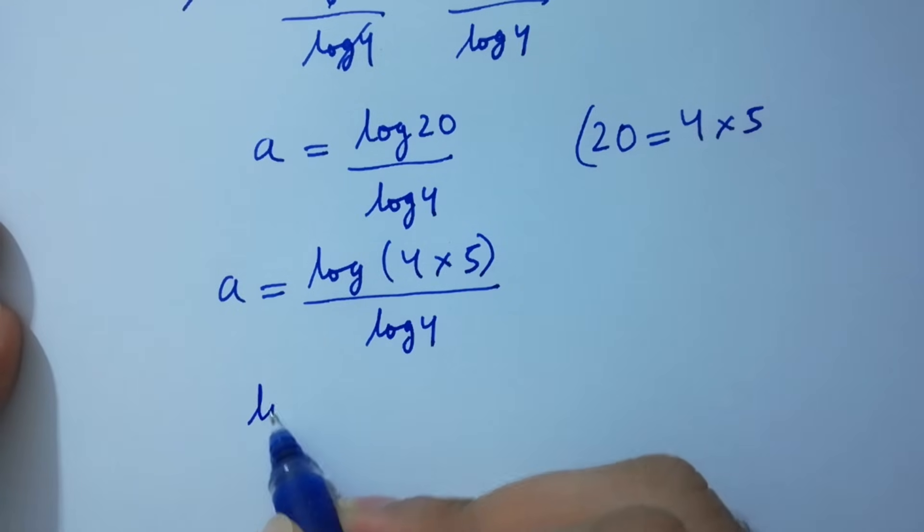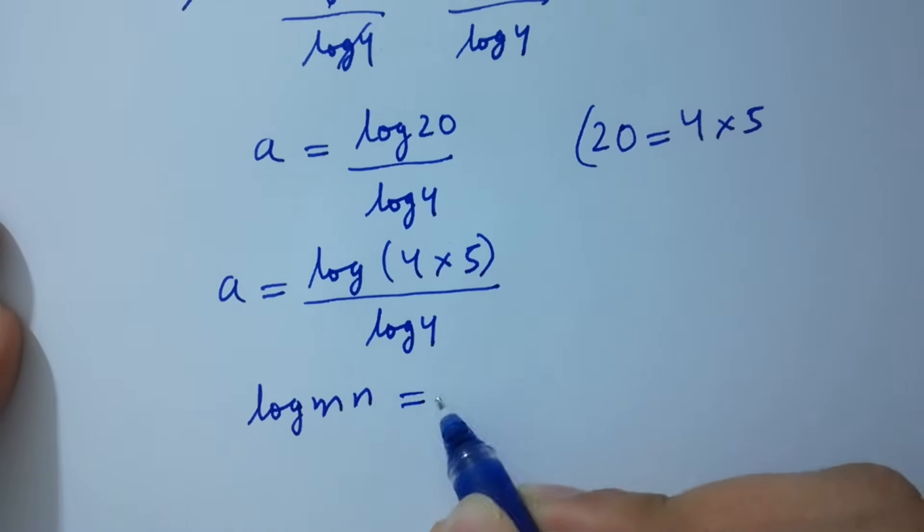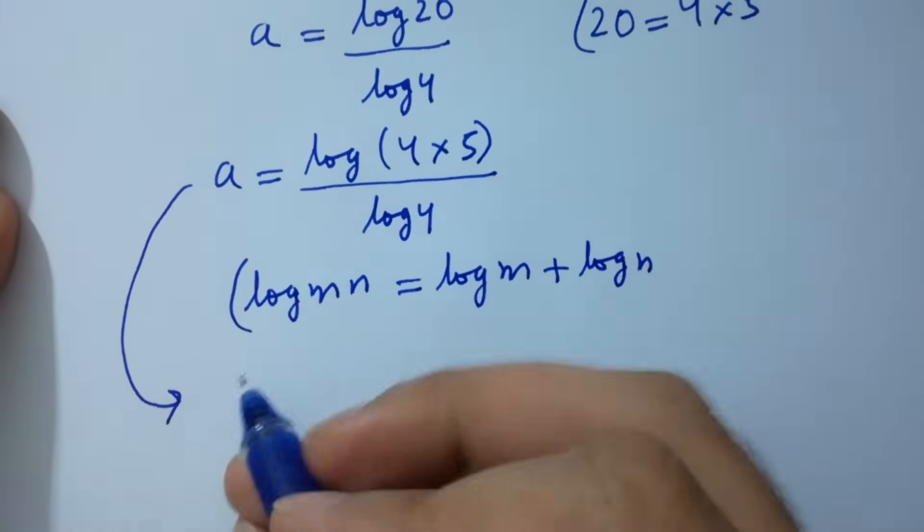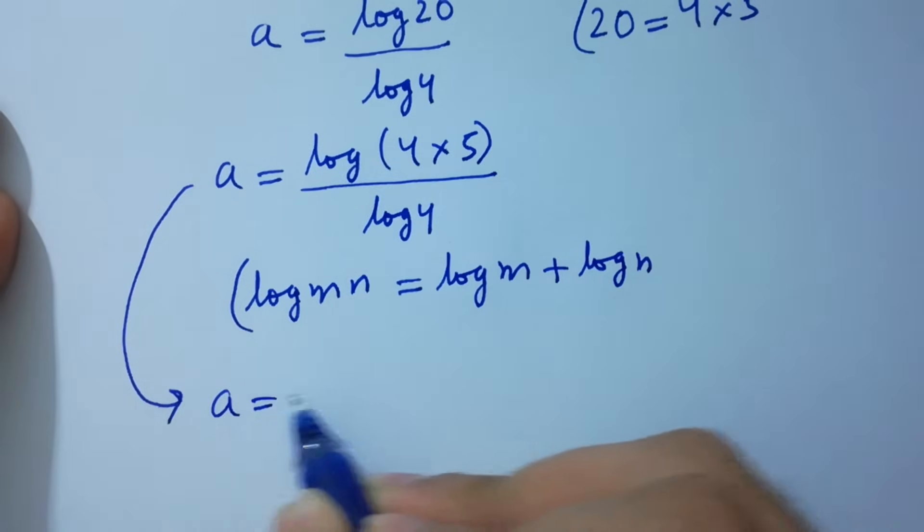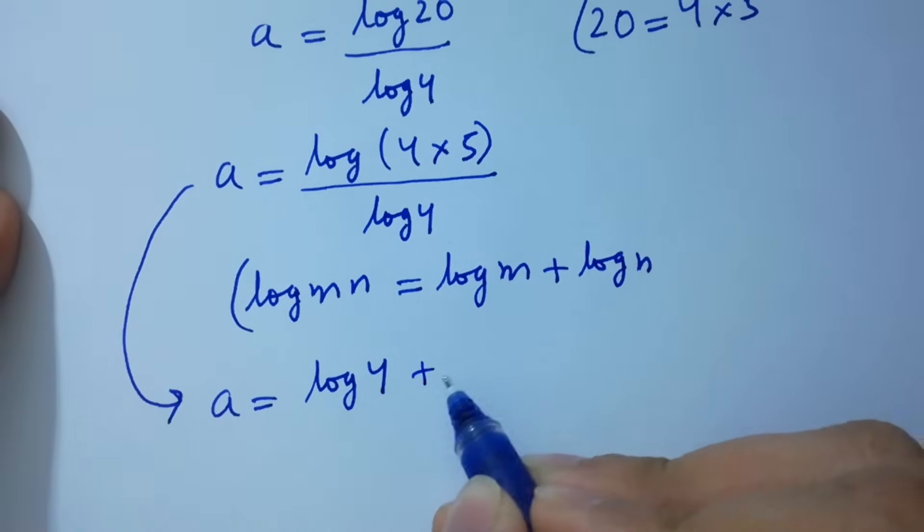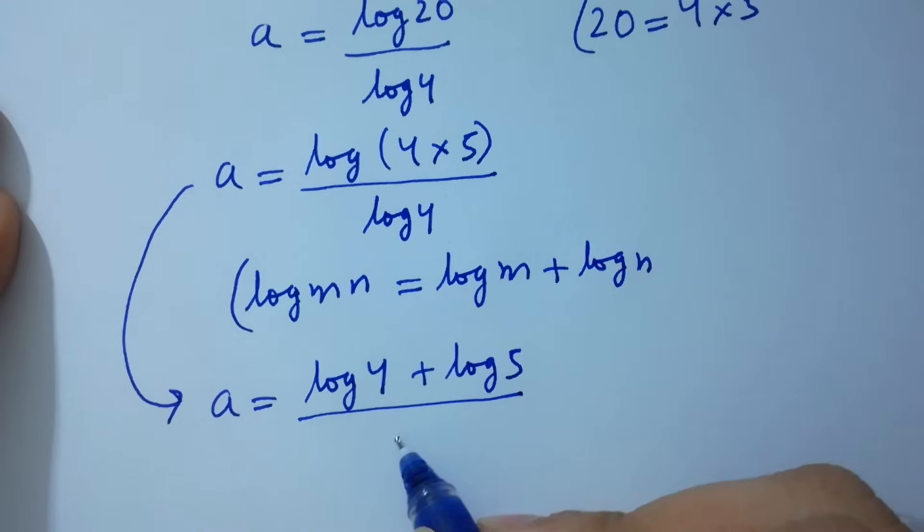Log m n equals log m plus log n. A will be equal to log 4 plus log 5 over log 4.